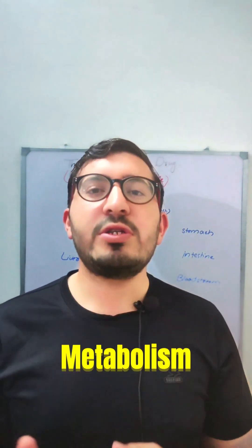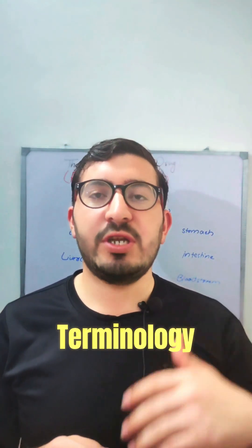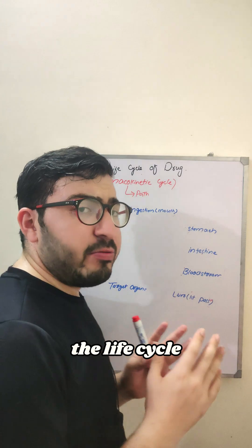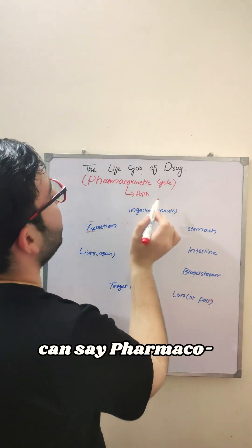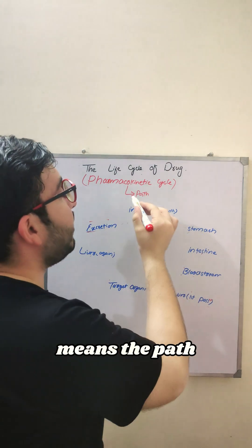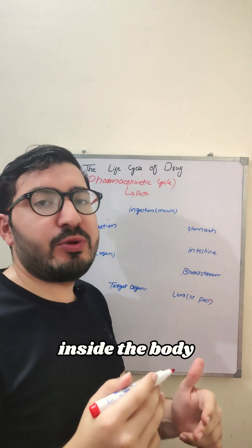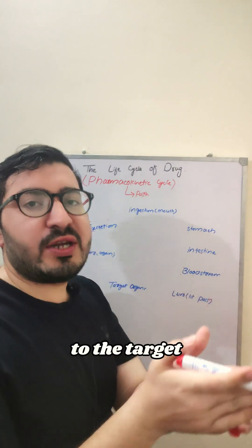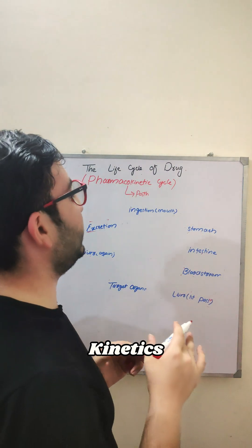Ingestion. Absorption. Metabolism. Maybe this is a bit confusing terminology in pharmacology — let's break down in a very simple way the life cycle of drugs, or we can say pharmacokinetics. Pharmacokinetics simply means how drugs move inside the body — how the drug gets to the target site. This whole process is called pharmacokinetics.